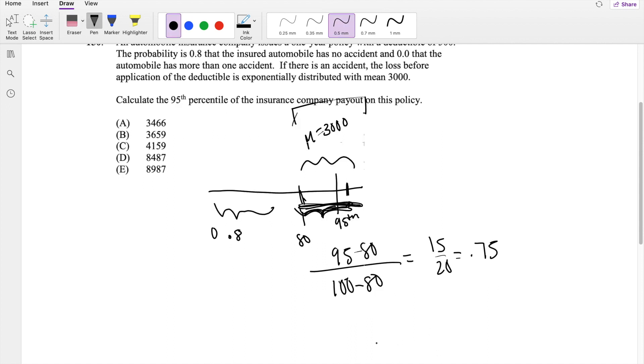So then this becomes a really simple CDF problem. F of big T equals little t equals 1 minus e to the negative t over lambda.